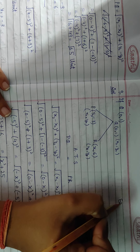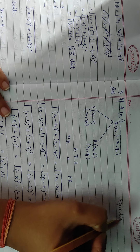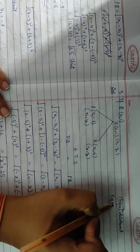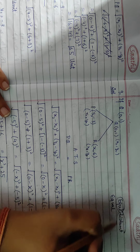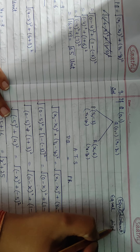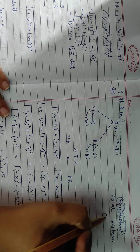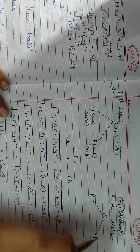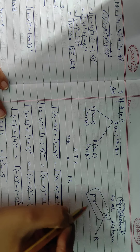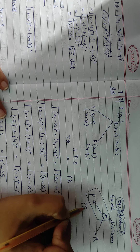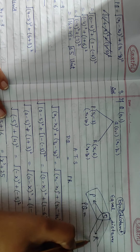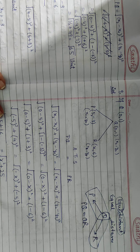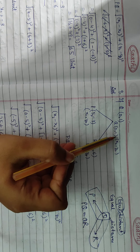This is a quite lengthy problem, but it is easier. The key word here is equidistant, which means equal distance. So Q point is equidistant from both P and R, meaning the distance from Q to P equals the distance from Q to R.